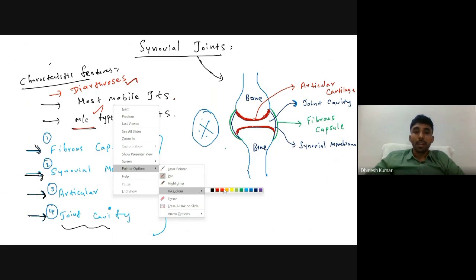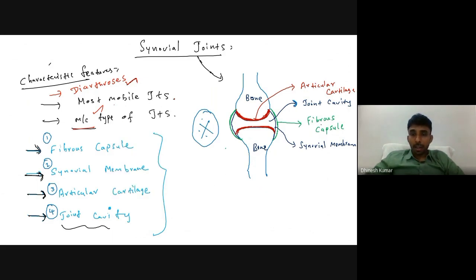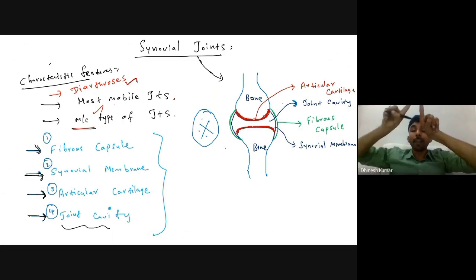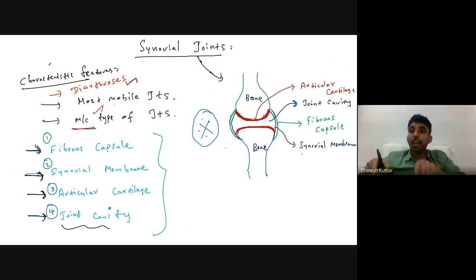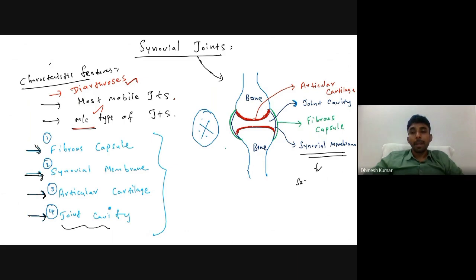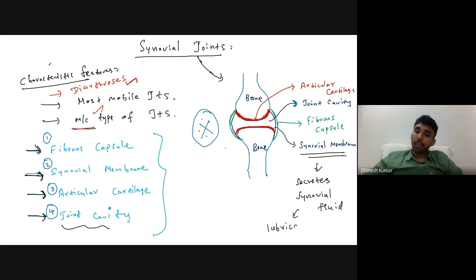The fibrous capsule encloses the articular surfaces except at the articular cartilage. The inner aspect of the fibrous capsule is lined by a thin membrane called the synovial membrane, which secretes synovial fluid. The function of synovial fluid is lubrication of the joints — minimizing the friction between the bones.